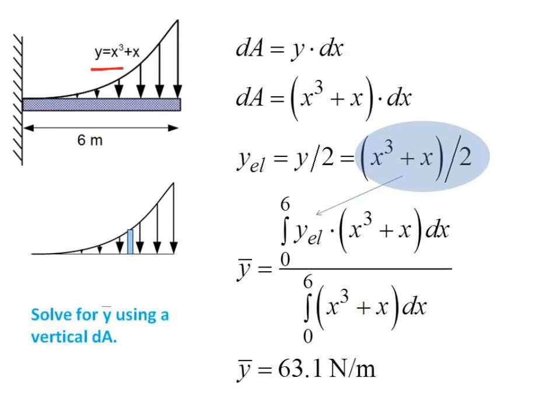Let's go back and look at our problem here. y is x cubed plus x. I want to find y bar, but using a vertical differential element. I can say dA is the same vertical strip as it was before. I just need to make sure that my yEl is the coordinate for the centroid of my differential element. In this case, halfway up. So I have y divided by 2 that goes into this. And if you plug that in, you will see that your integral ends up being 63.1 newtons per meter.